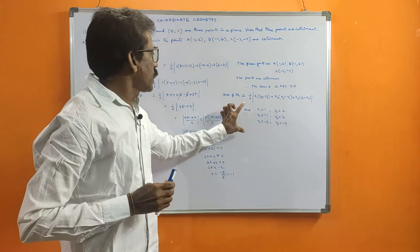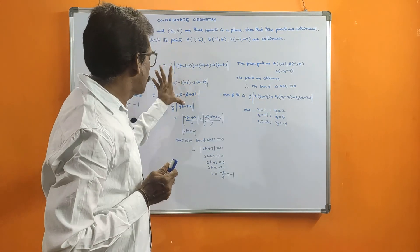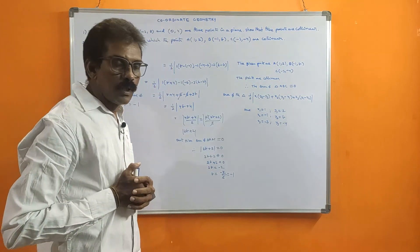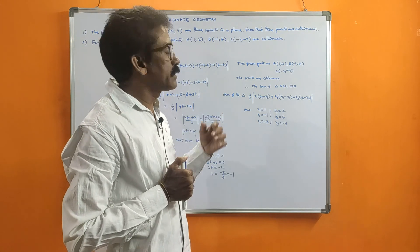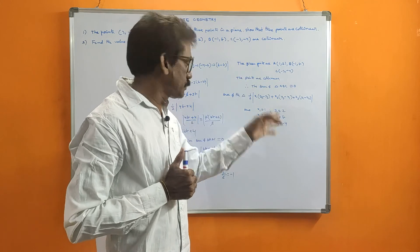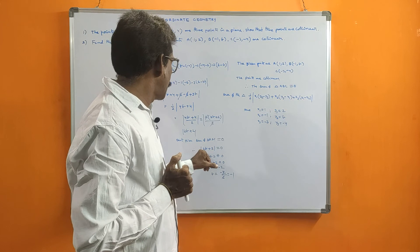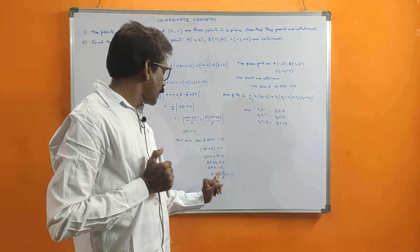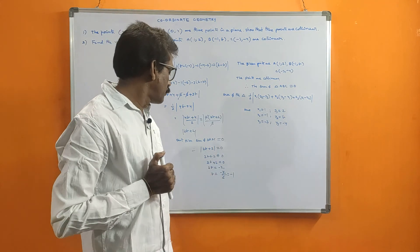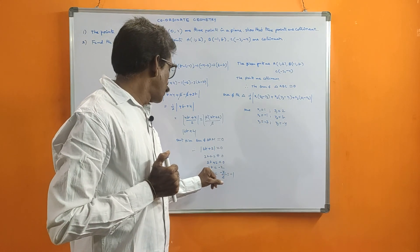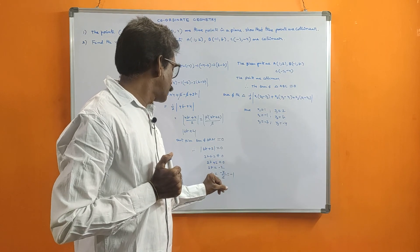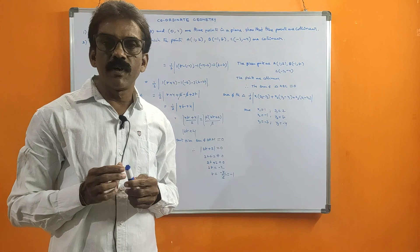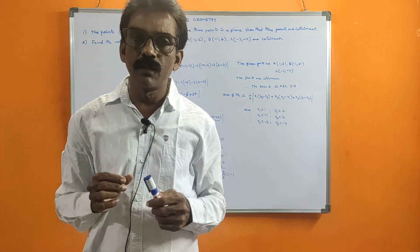We calculated the area of the triangle using the given points and got 2b + 2. Because the points are collinear, the area is 0, so we equated it to 0 and found b = -1. I hope everyone understood this problem. If you like this video, please subscribe to my channel. Thank you for watching.